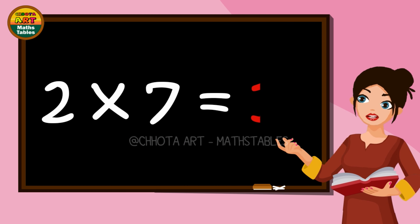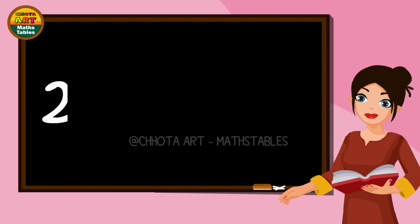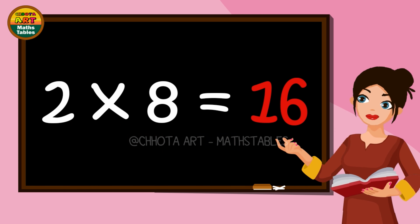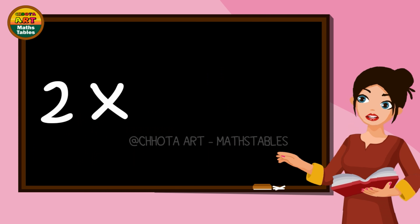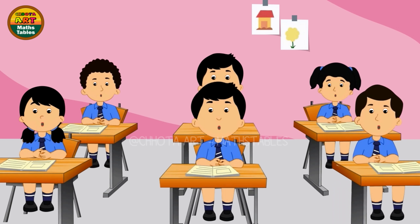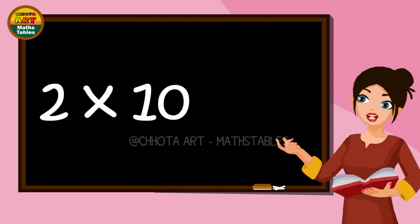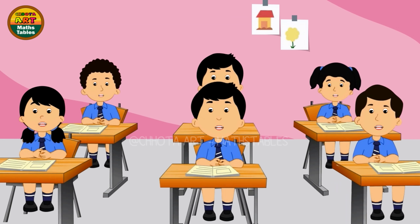Two sevens are fourteen, two eights are sixteen. Two nines are eighteen, two nines are eighteen. Two tens are twenty, two tens are twenty.